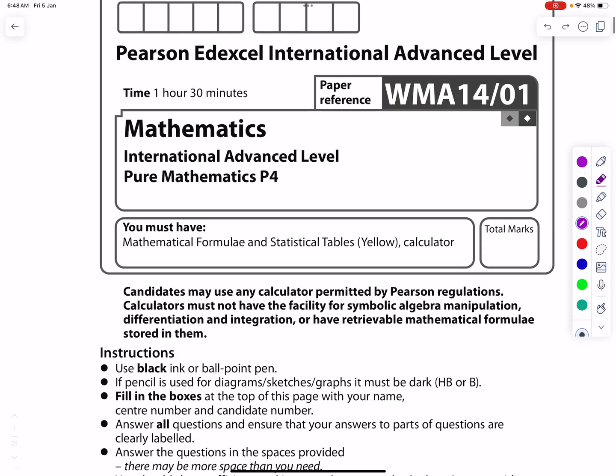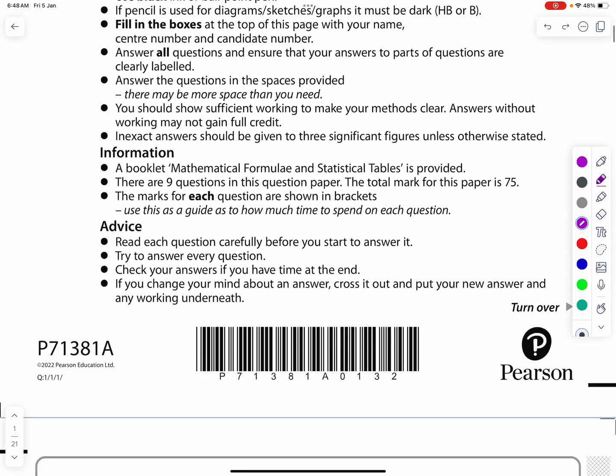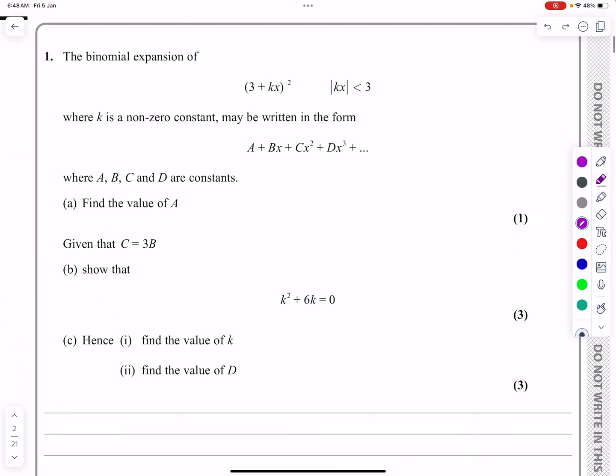Okay, this is the P4 paper from June 2022. It's question number one, which is going to be a binomial expansion question.